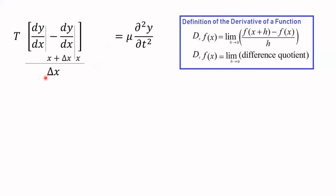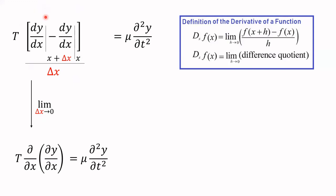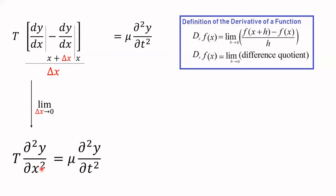The derivative of the derivative is what we call the second derivative. I've had to switch from ordinary lowercase d's to the script d because this quantity y — the displacement of the string — really depends on two variables: where you are on the string (x) and what time you're at (t). So we're really talking about a partial derivative with respect to x. If you know the function depends on several variables, you're forced to use partial derivatives. Let's rewrite this now with the notation of the second partial derivative of position with respect to x.